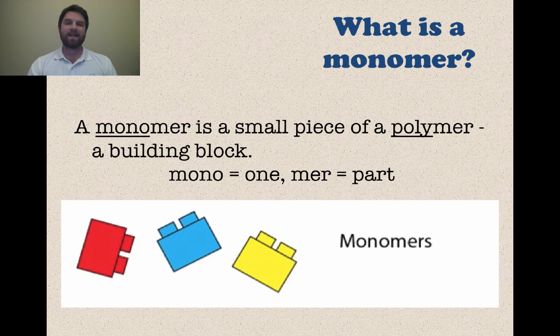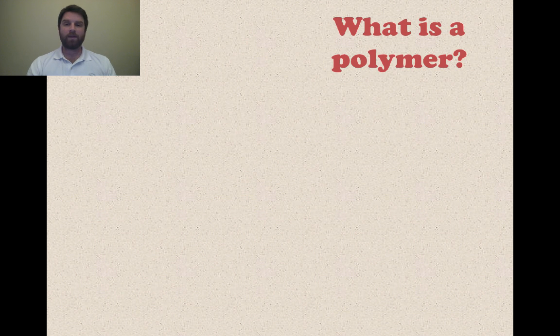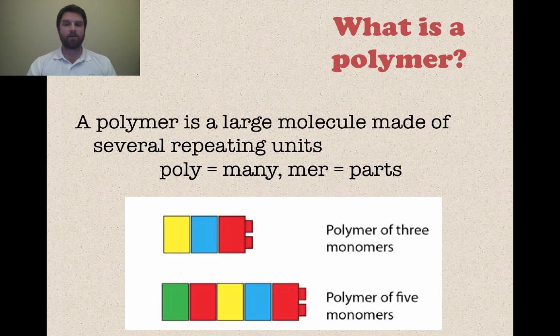So what is a monomer? A monomer is a small piece of a polymer or a building block. Think Legos once again. Mono means one, mer means part. So what would a polymer be?